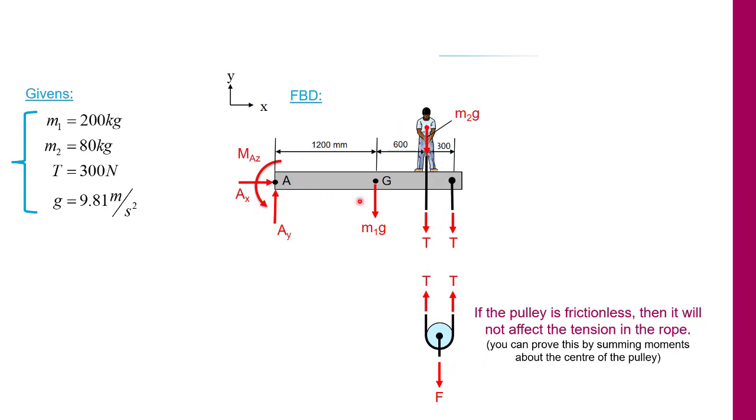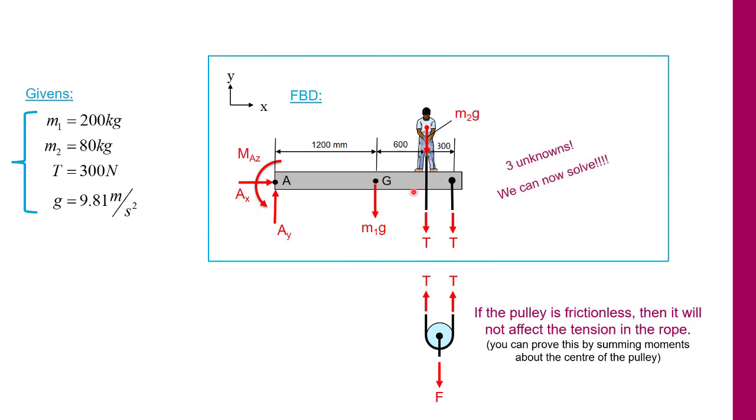So now if we reanalyze this system we see that we now only have three unknowns: Ax, Ay, and our moment Maz. The masses are known and the tension is known as 300 newtons, so we can now solve.